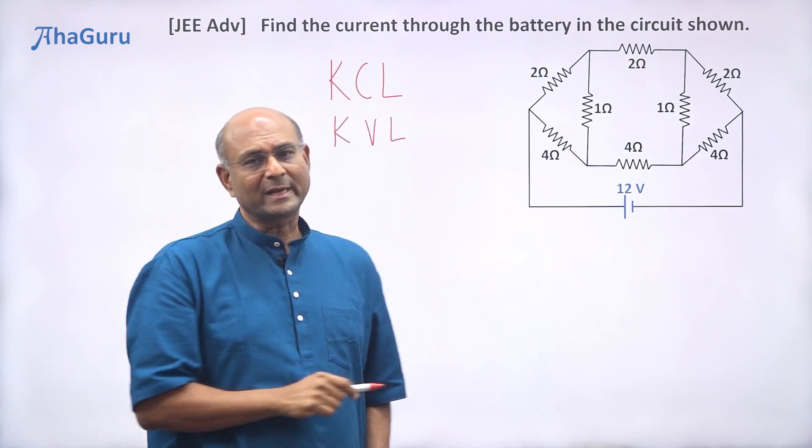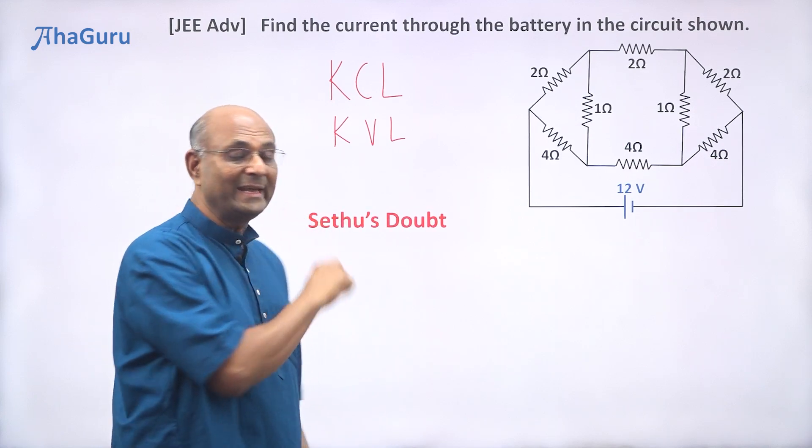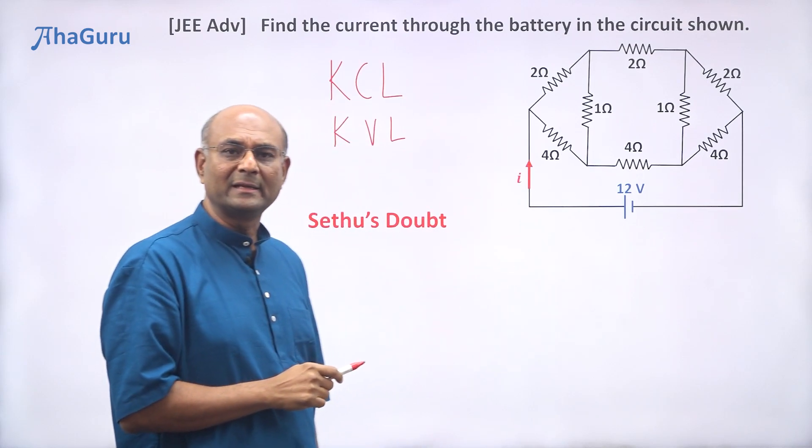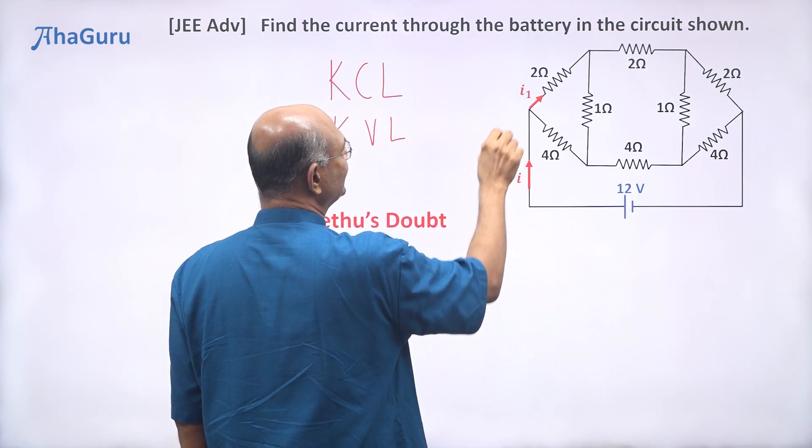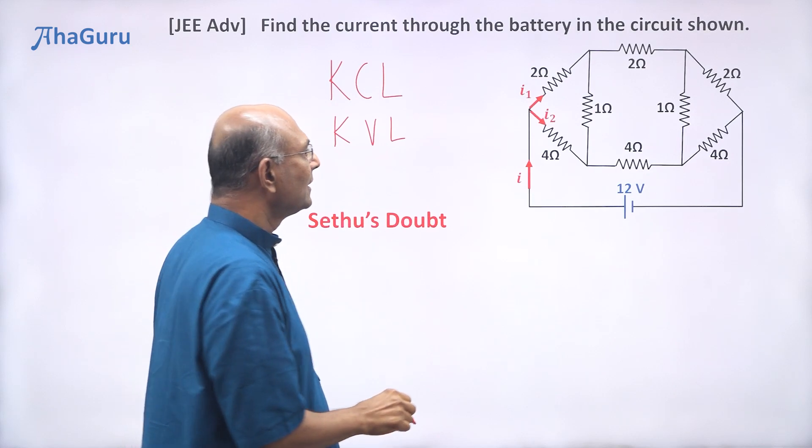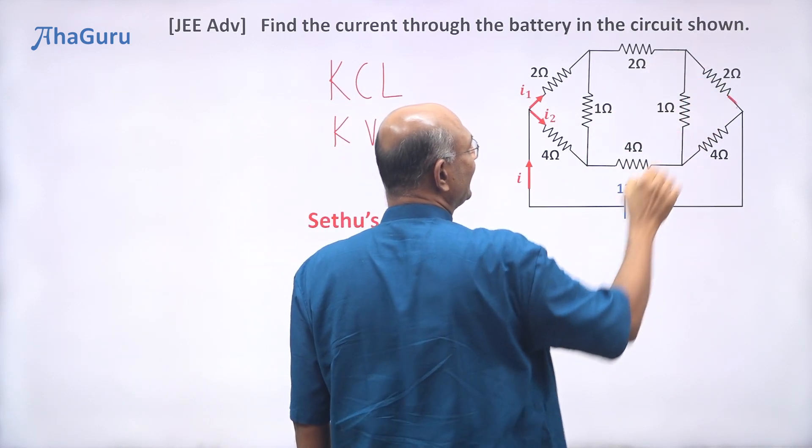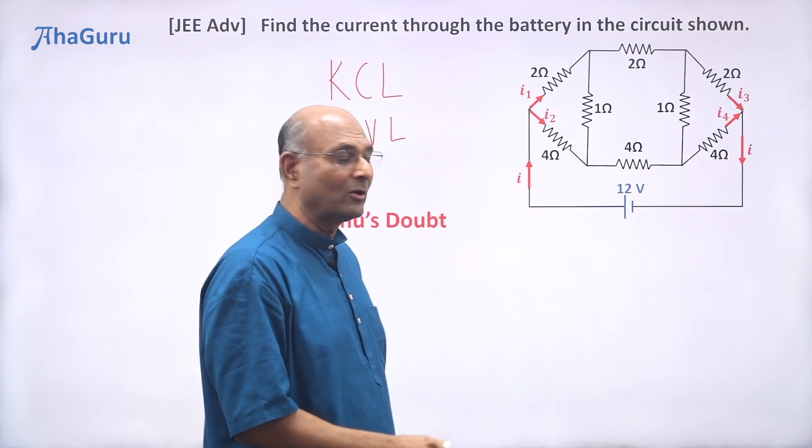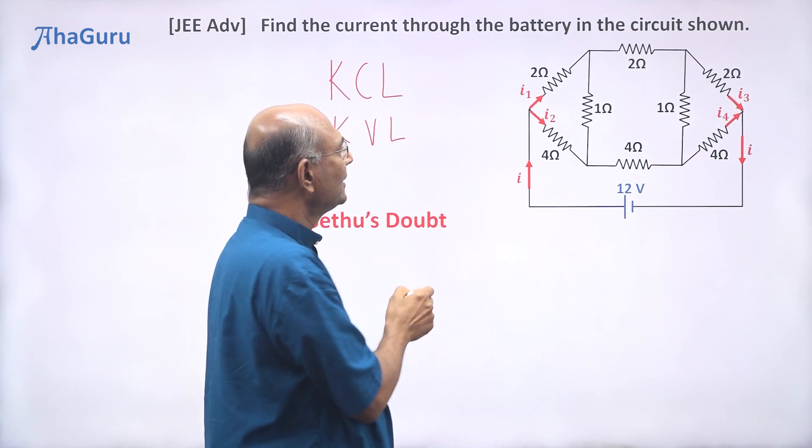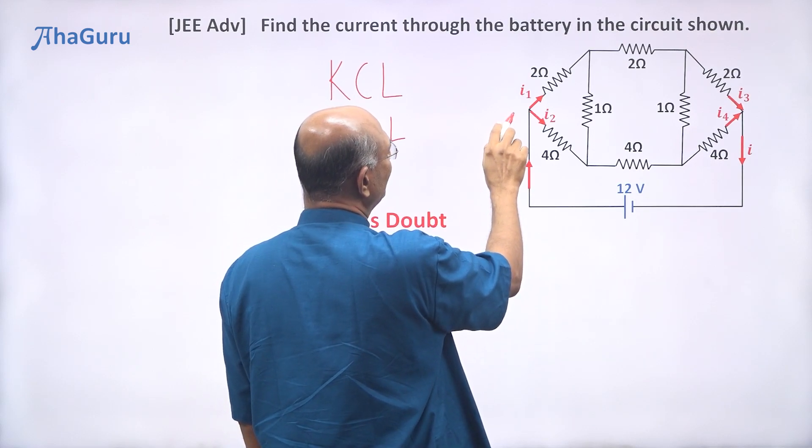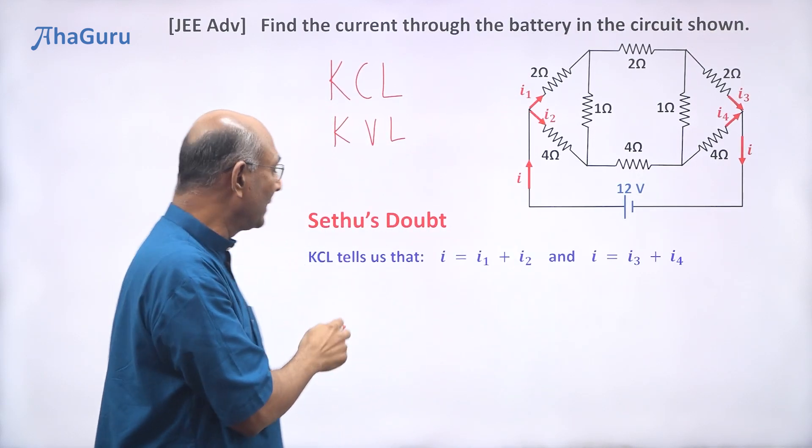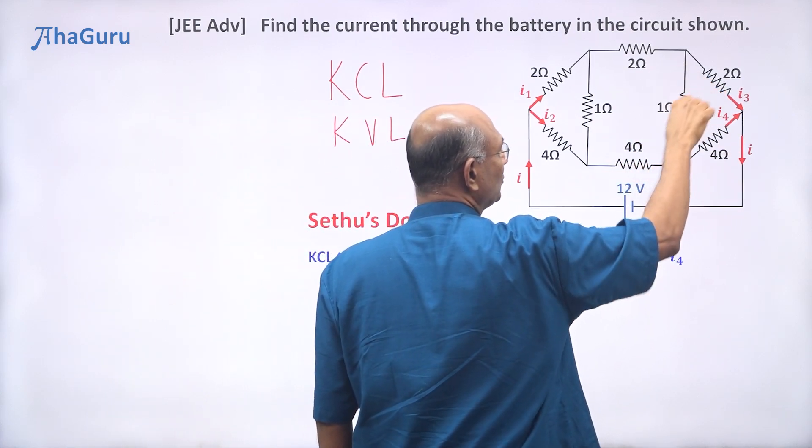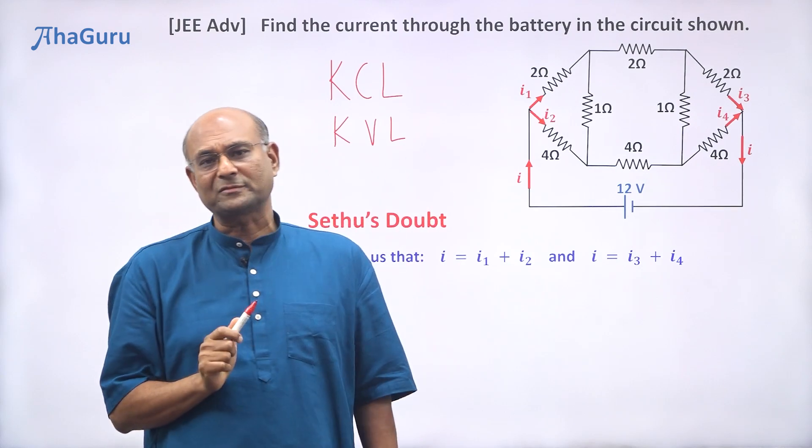Seidhu today was trying to solve this problem and he asked me a very interesting doubt. He said, let's say the current coming in is I here, and it's going to split up as I1 and I2. The current there is I3. The current here is I4. And obviously, the current coming out is I. From Kirchhoff's current law, I must be equal to I1 plus I2. Similarly, I must be equal to I3 plus I4.